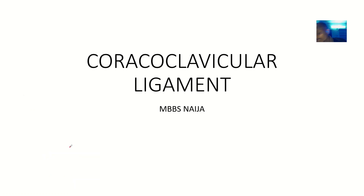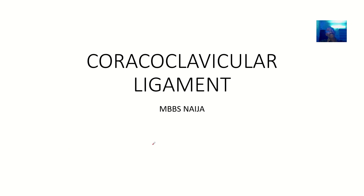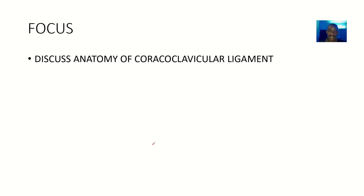Hey, what's up guys. We'll be talking about the coracoclavicular ligament. The coracoclavicular ligament connects the coracoid process of the scapula to the clavicle bone. This is the ligament adjoining the coracoid process of the scapular bone to the clavicle.